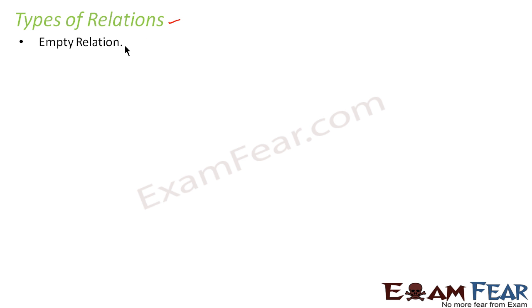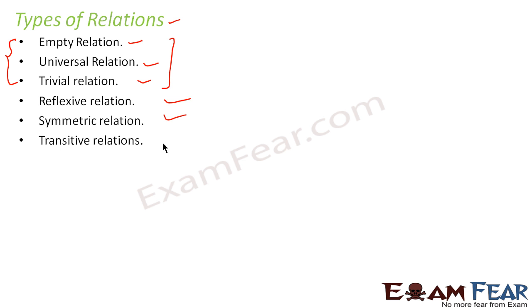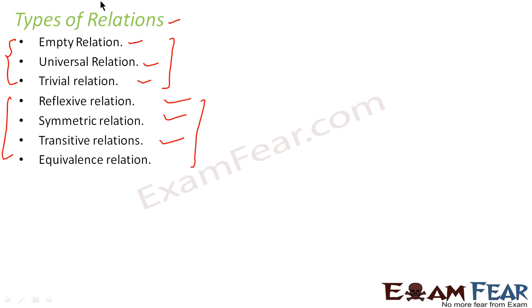Here we will learn types of relations. Relations can be of various types: empty relation, universal relation, and trivial relation — these three form one bucket. Then we have reflexive relation, symmetric relation, transitive relation, and equivalence relation — these four form another bucket. I'll explain all of these in the next few slides.